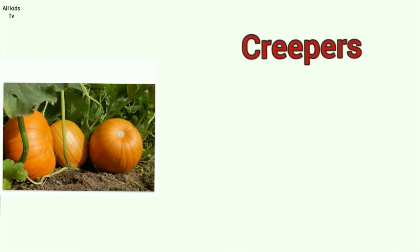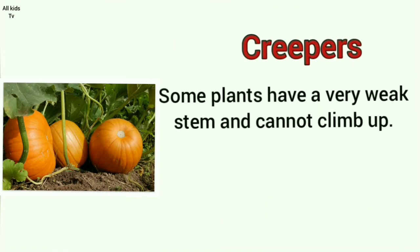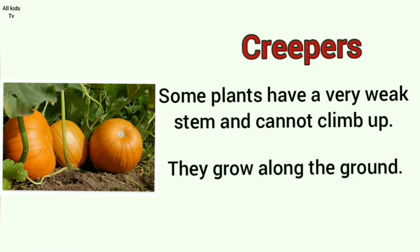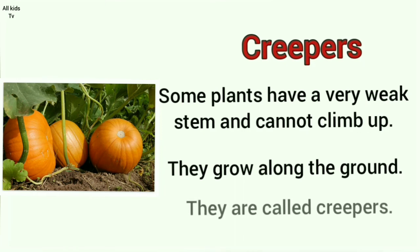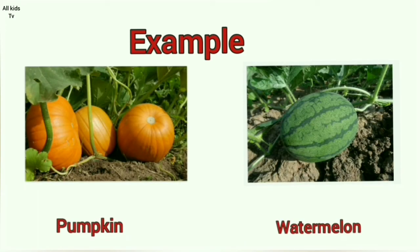Creepers. Some plants have a very weak stem and they cannot climb up. They grow along the ground. They are called creepers. Some examples of creepers are pumpkin and watermelon.